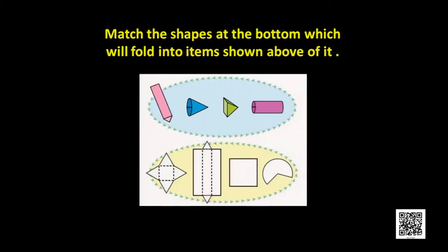Now we have to match the shapes at the bottom which will fold into the items shown above. You see, below there is one square with four triangles around it. We have to fold it. If I fold this one, what type of object will I get? You see — in the upper part, I will get this one. What is this? This is a square pyramid.